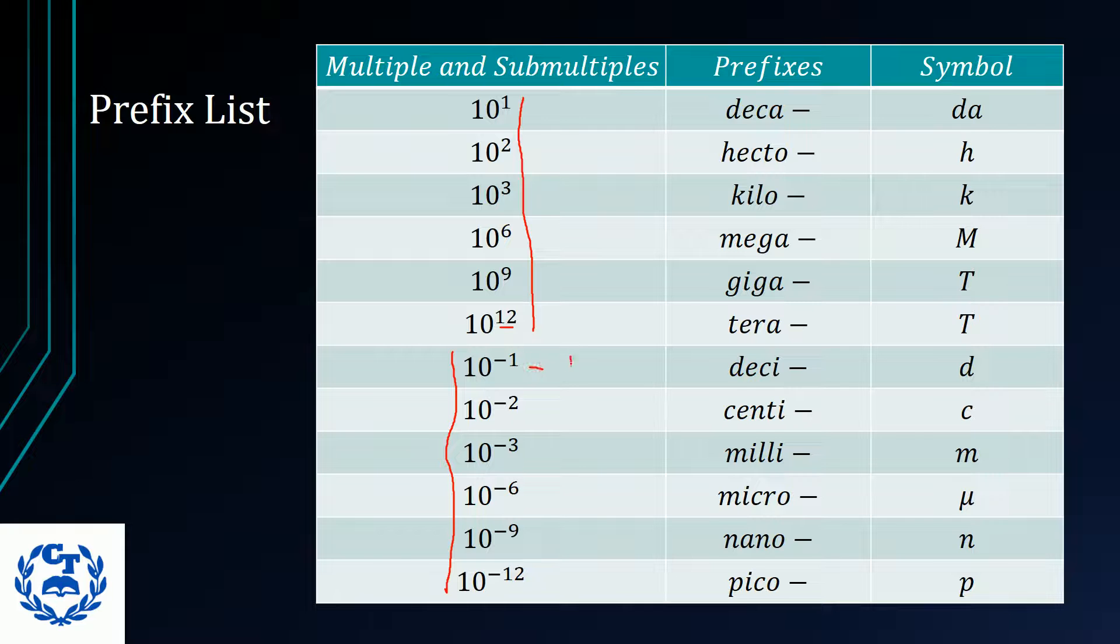Now, according to your indices, you should understand that this here could be written as 1 over 10 to the power of 1. Now, each one of these multiples have their own particular name. So, for example, here you would see one of the common ones, which is kilo, and one of the other common ones that you'll come across, which is centi.